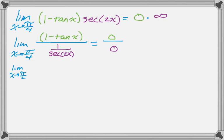So I'm going to use, well actually I'm going to simplify this again. So 1 over secant of 2x is just cosine of 2x and this looks sort of manageable. So use L'Hopital's rule.